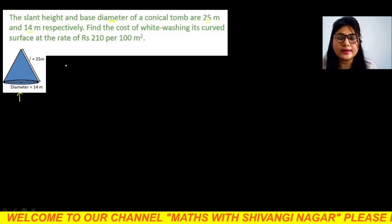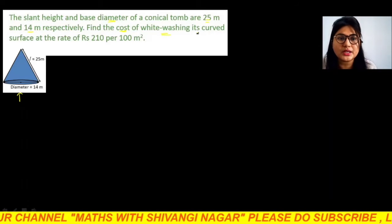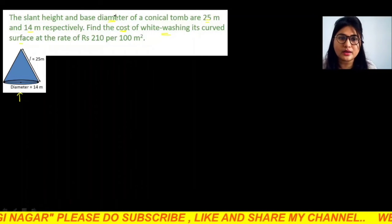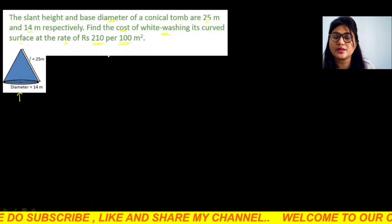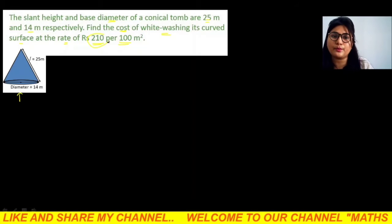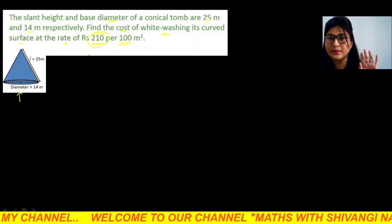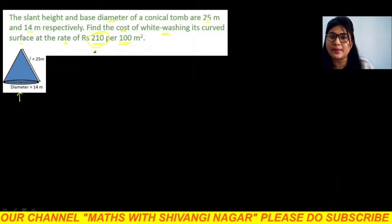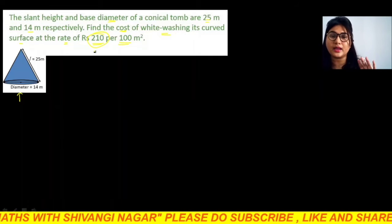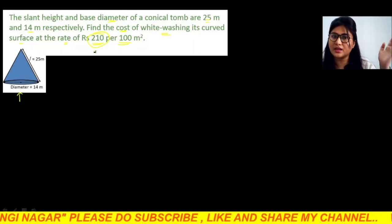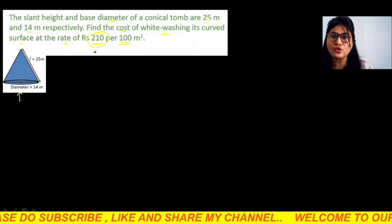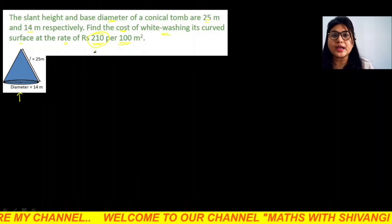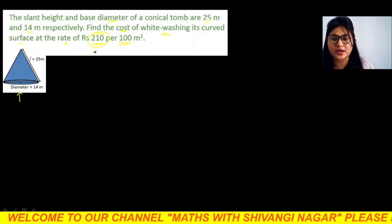So we are required here to find the cost of whitewashing its curved surface. We have to paint the curved surface, so we have to find the cost, and the rate is given. What is the rate? The rate is Rs 210 per 100 meter square, which means every 100 meter square how much we have to pay? We have to pay Rs 210, so we can remove the cost per meter square. Now, to find the total cost, we will calculate the curved surface area of the cone.